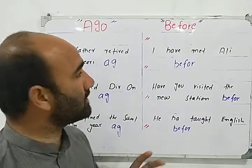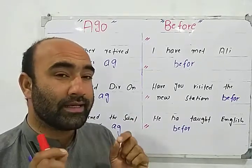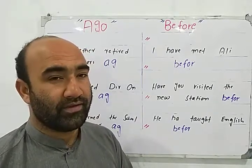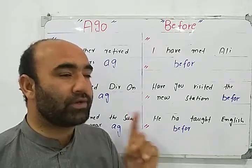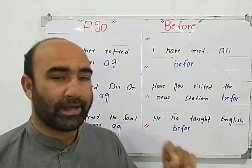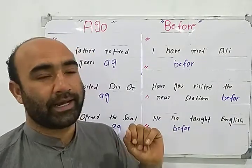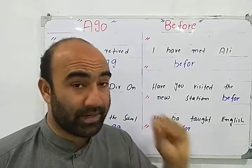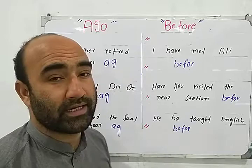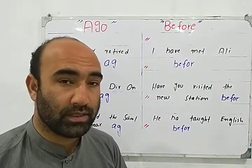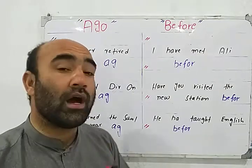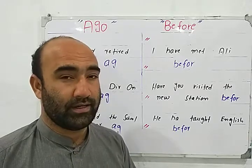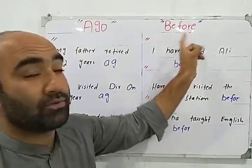Let's talk about these two important words: 'ago' and 'before'. In simple words, we use 'ago' with a specific or particular time — whenever we are talking about a particular time and want to indicate when an action took place. When we are uncertain or unknown about the exact time of the action, we use the word 'before'.